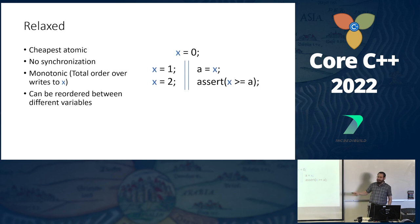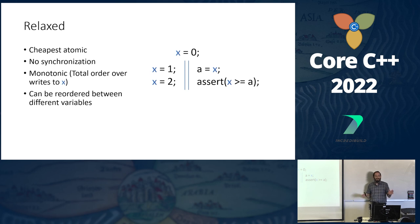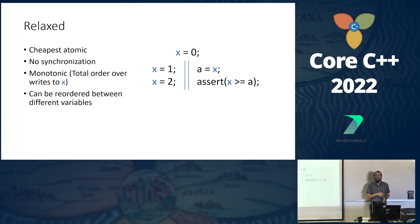For different variables, we can reorder all write accesses and load accesses. This is an approximation — it's actually more complicated than just reordering.